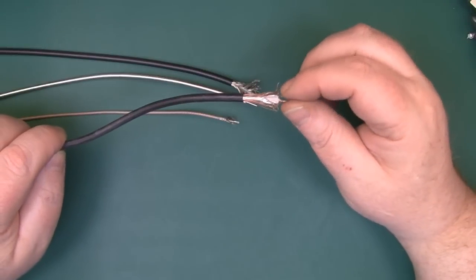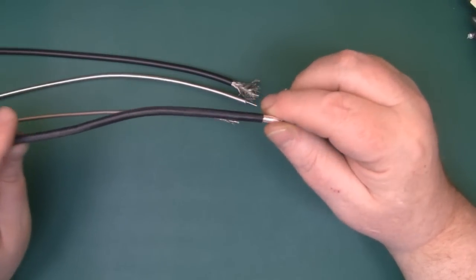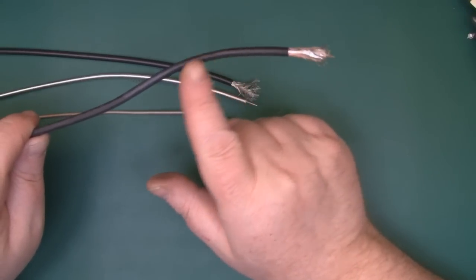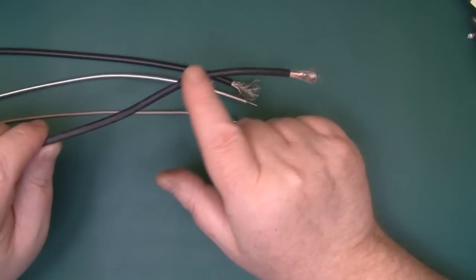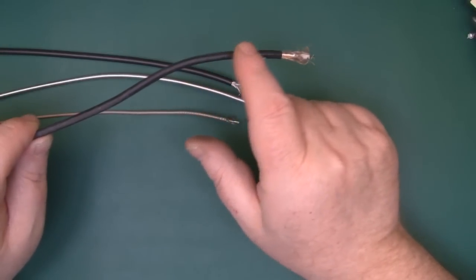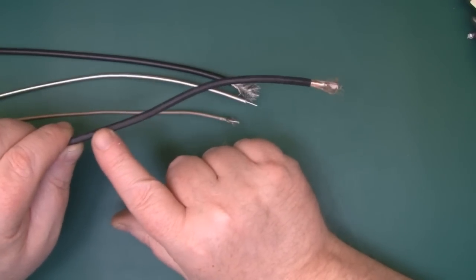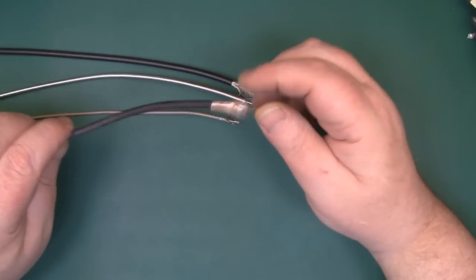When it arrived you can probably make out that somebody's attacked the outer sleeving with some sandpaper, probably in an effort to remove all the numbering and wording on the side because this is not LMR coax.